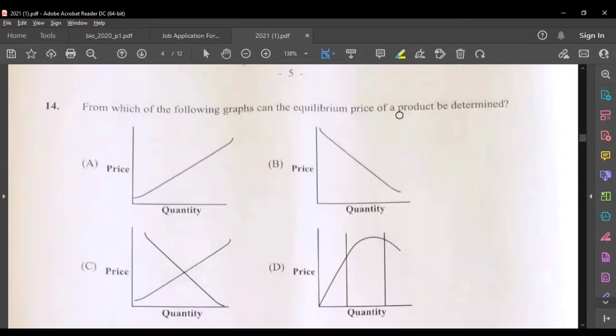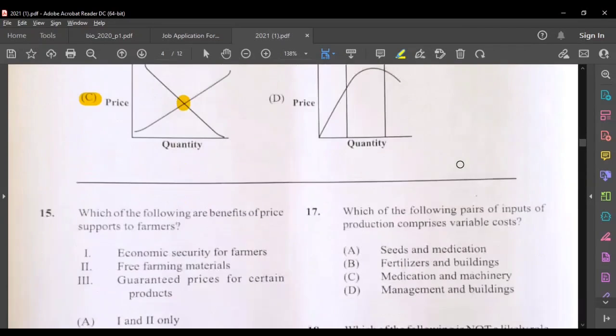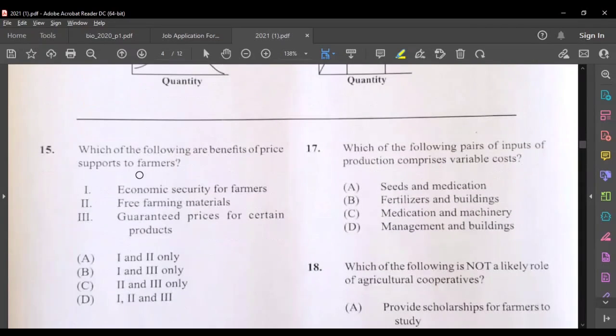Question fourteen, from which of the following graphs can the equilibrium price of a product be determined? The answer here would be C. Equilibrium price would be where the demand and the supply would intersect. Question fifteen, which of the following are benefits of price support to farmers? One, economic security to farmers.